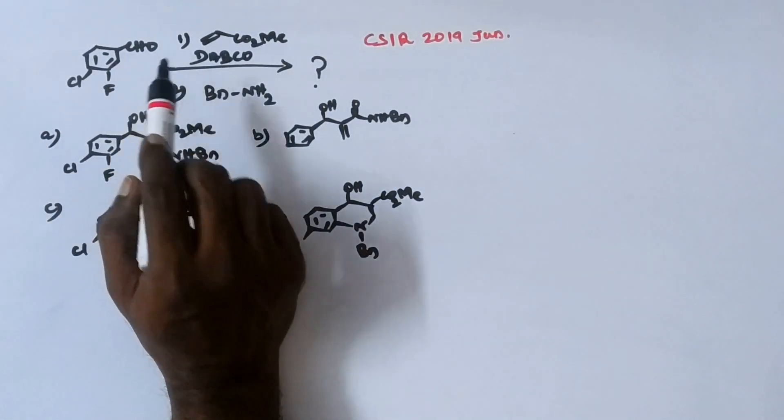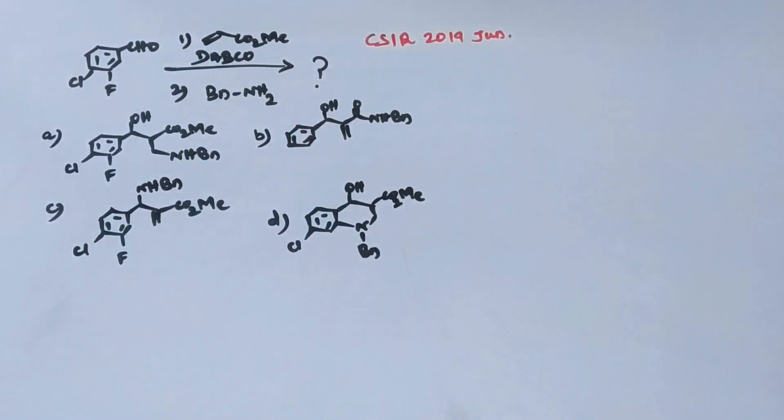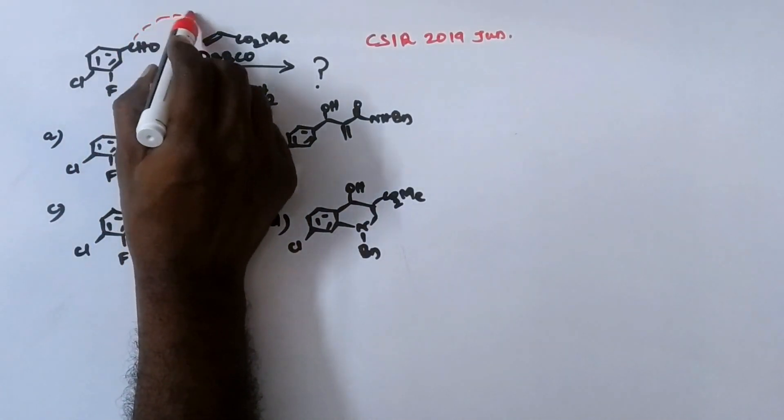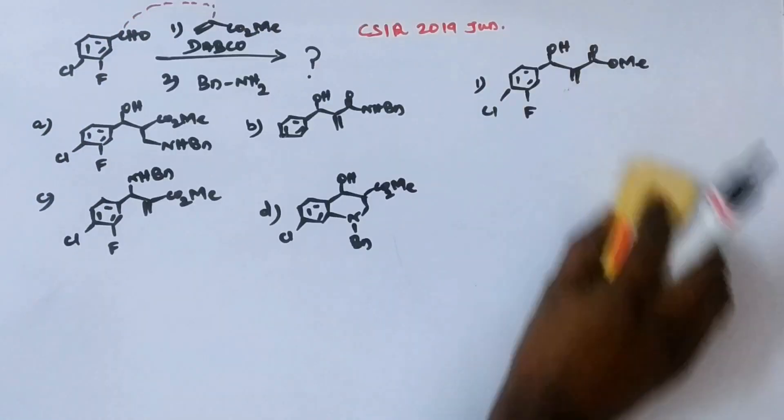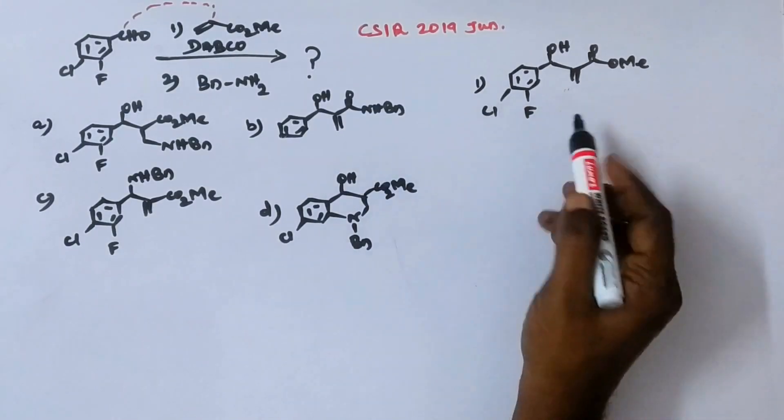The first step? The first step is aldehyde and methyl acrylate. So it is Baylis-Hillman reaction. The product of Baylis-Hillman reaction is, as we have already seen, carbon-carbon bond formation between. This is the Baylis-Hillman reaction. The product of the first step.